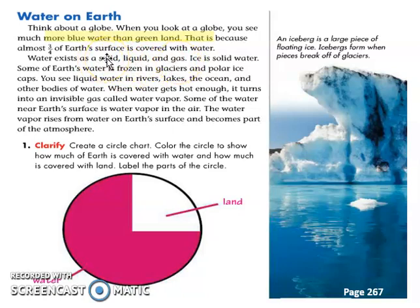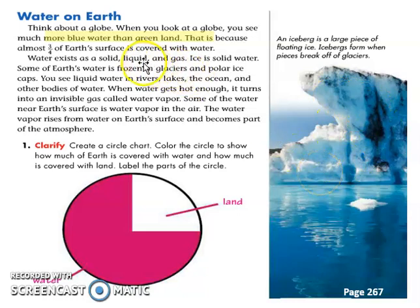Water could be in a form of solid, like this iceberg — so this is solid water. Water could also be in liquid form. The examples are oceans, lakes, rivers, and ponds. Water could also be in a form of gas. When water evaporates, it becomes a gas. The examples of that are water vapors.